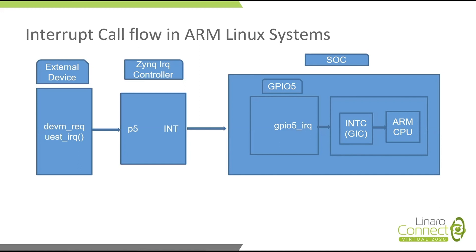We will try to capture each part of this diagram — what exactly this devm_request_irq contains, what this IRQ chip contains, and internally how the GPIO5 IRQ or whatever GPIO port is used works. In between, of course, the actual interrupt mechanism from the GIC, and in the IRQ subsystem — how the Linux IRQ subsystem maintains the actual function calls and the domain mapping. That is in between the external device to the hardware IRQ controller.